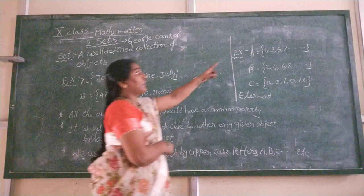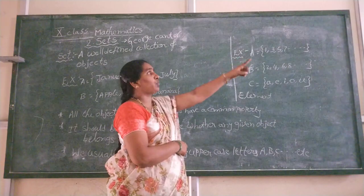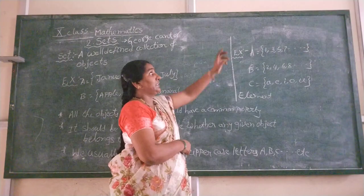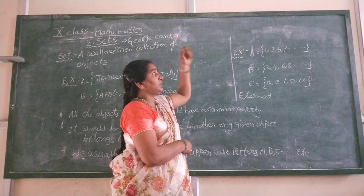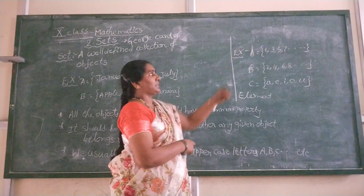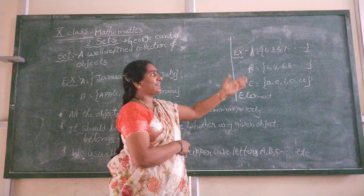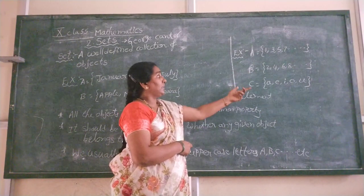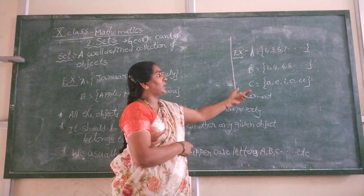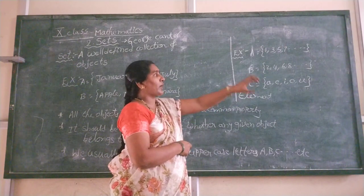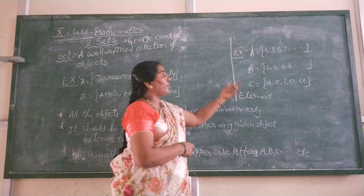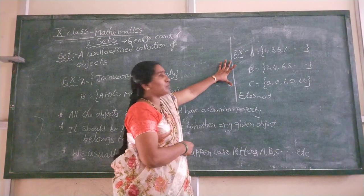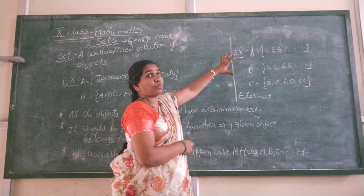Here A = {1, 3, 5, 7, ...} — this is the well-defined collection of odd numbers. B = {2, 4, 6, 8, ...} — this is the set of even numbers. C = {A, E, I, O, U} — this is the collection of vowels in the English alphabet. These are examples of sets.